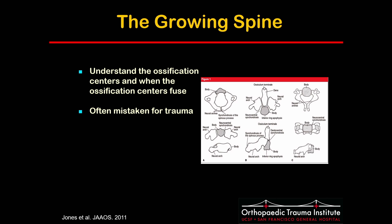One key difference in the pediatric spine is that it is still growing. Just like everywhere else in the body, we have ossification centers that eventually fuse. Ossification begins in utero and continues through adolescence. For example, the posterior arch fuses at age 3 and fuses to the anterior body by age 7. The C2 body fuses to the odontoid process at age 7. These could often be mistaken for trauma.